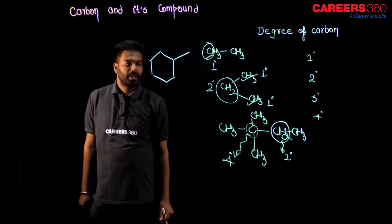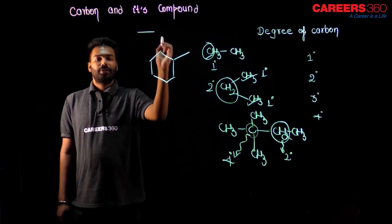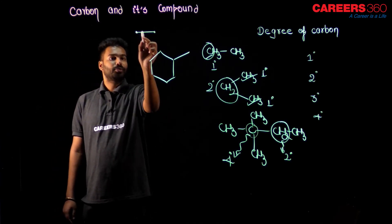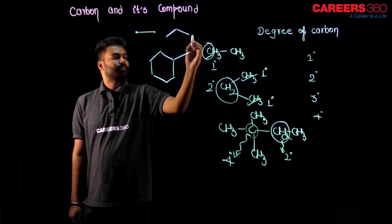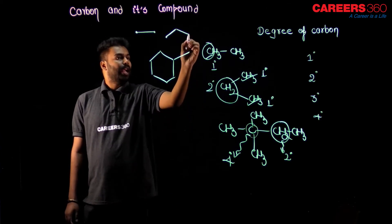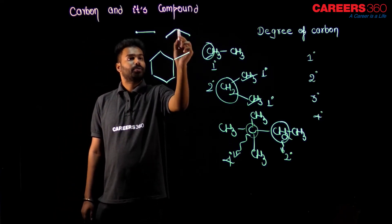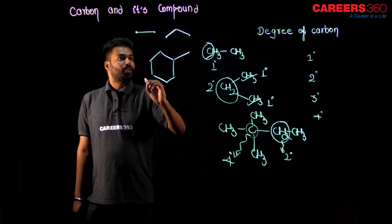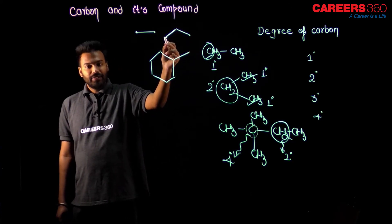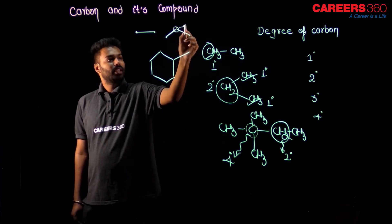Now suppose this is a compound drawn in line notation. In a line structure, the starting point is a carbon, the end point is a carbon, and each bending point is also a carbon. So for example, a two-bend structure has three carbons. The degree of the middle carbon is two because it is connected on the left side with one carbon and on the right side with one carbon — so it has two degree.